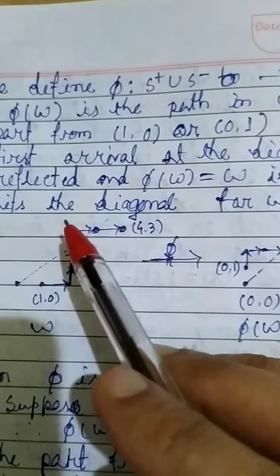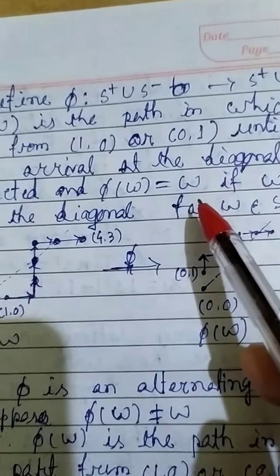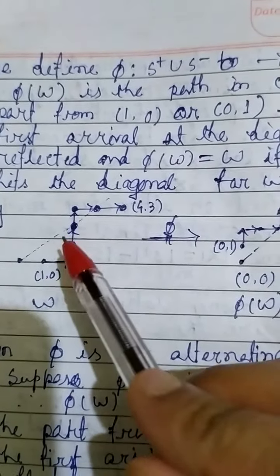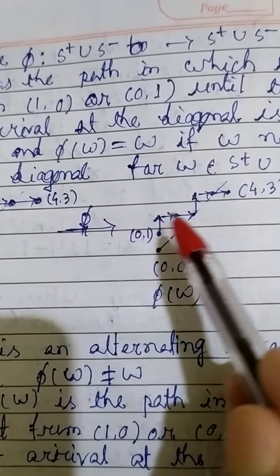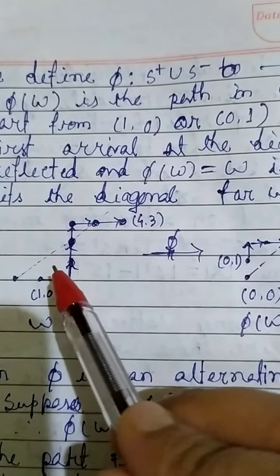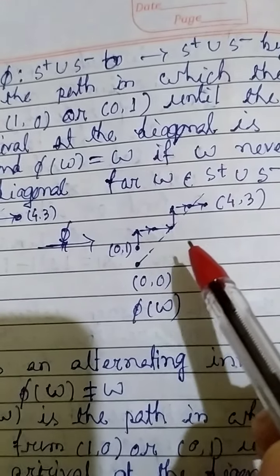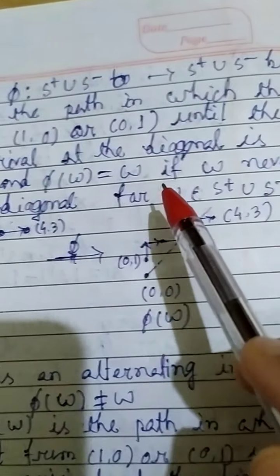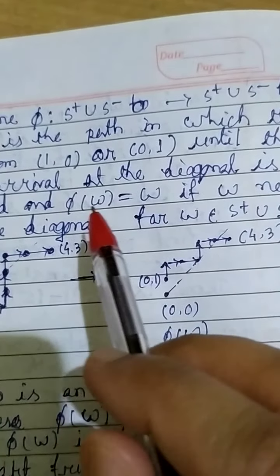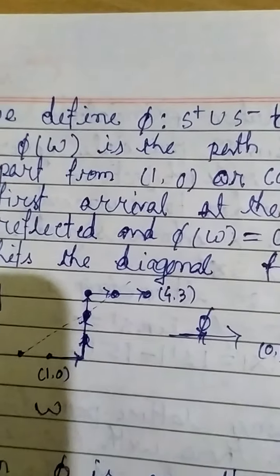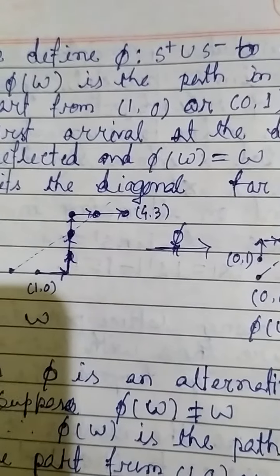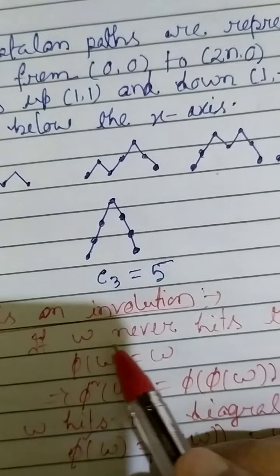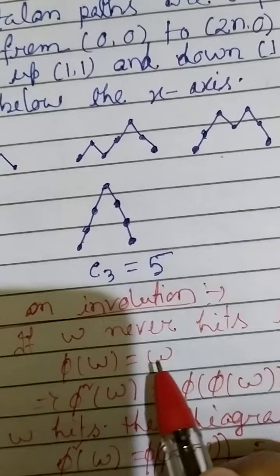If the path w does not hit the diagonal, then π(w) = w. This is the definition of π. We now verify π is an involution: if w never hits the diagonal, π(w) = w, so π²(w) = w. If w hits the diagonal, π(π(w)) = w. Therefore π² equals the identity.